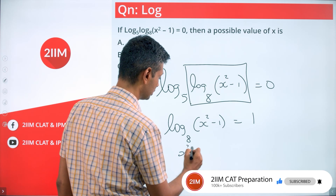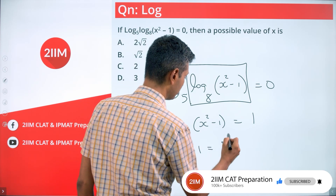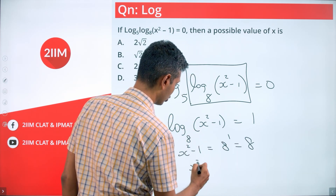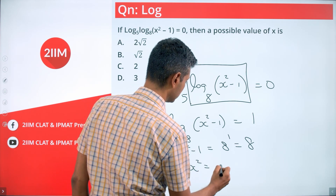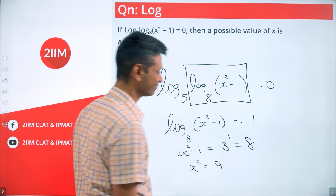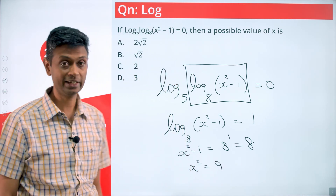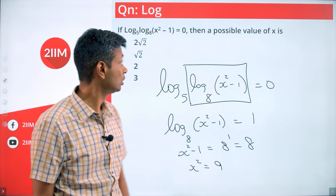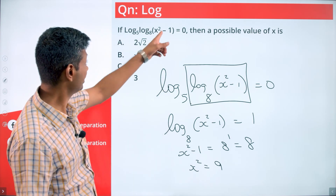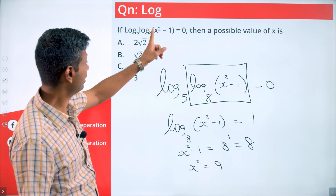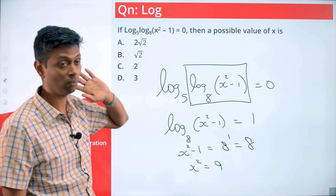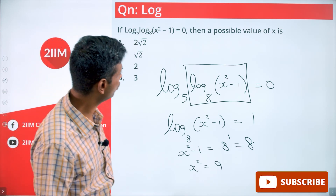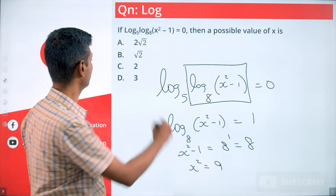That something is 8 to the power 1, which is 8, so x squared minus 1 equals 8, meaning x squared equals 9, and x equals plus or minus 3. Checking: 9 minus 1 is 8, log 8 to base 8 is 1, log 1 to base 5 is 0. So both x equals 3 and x equals minus 3 are valid solutions.